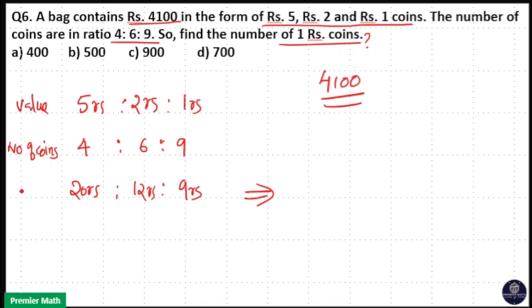But in this total value, 20 plus 12 plus 9. That is 20 plus 12 is 32, 32 plus 9 is equal to 41.